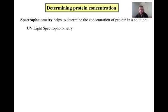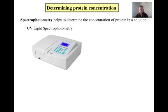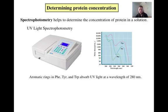UV light spectrophotometry is the second way to measure the protein concentration of a solution, and it is usually the preferred method if there is a choice between the two. It works on the principle that the ring structures of phenylalanine, tyrosine, and tryptophan absorb UV light at wavelengths of 260 and 280 nm. Because we assume that the proportion of these aromatic amino acids is roughly proportional to the amount of protein in the solution, this technique works.